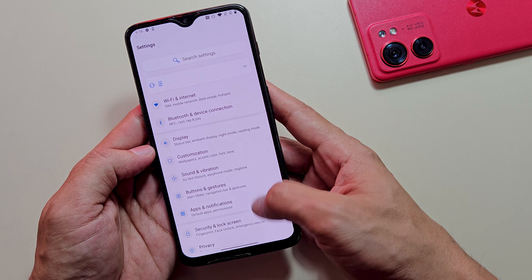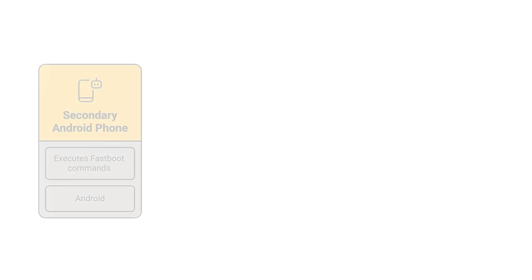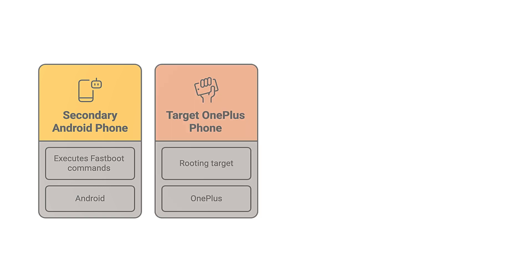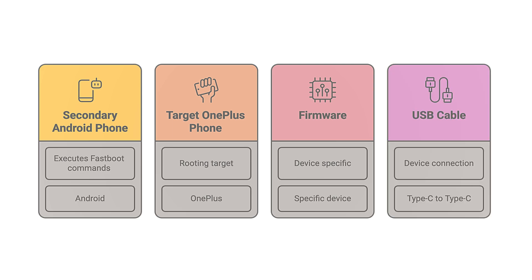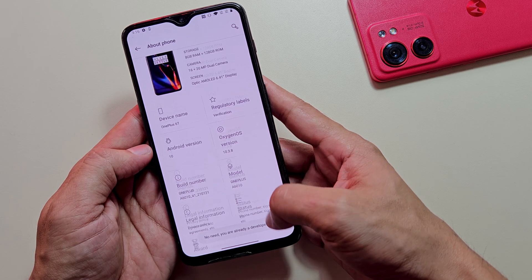Before we proceed, gather these essential items: a secondary Android phone to execute fastboot commands, your target OnePlus phone for rooting, the appropriate firmware for your specific device — details on downloading coming up — and a USB Type-C to Type-C cable for device connection. For this demonstration, I'm utilizing a OnePlus 6T.